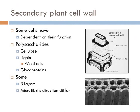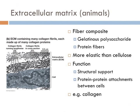Most animal cells secrete a fiber composite called the extracellular matrix, also known as the ECM. Like extracellular materials found in other organisms, one of the ECM's most important functions is structural support. The amount and composition of the ECM vary depending on the cell type. The ECM consists of a ground substance formed of a gelatinous polysaccharide and a network of protein fibers. The most common ECM protein fiber is collagen, which is more elastic than cellulose and forms a flexible extracellular layer.